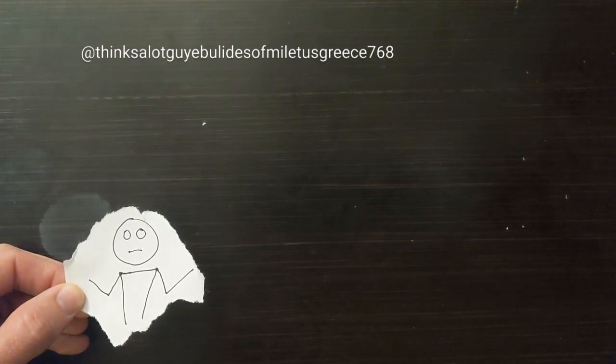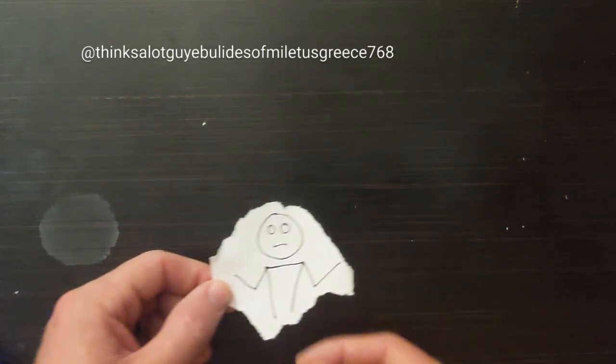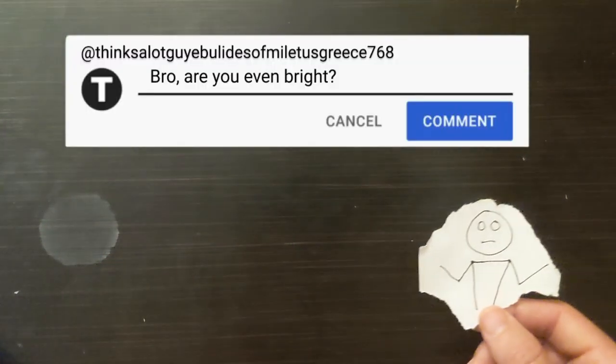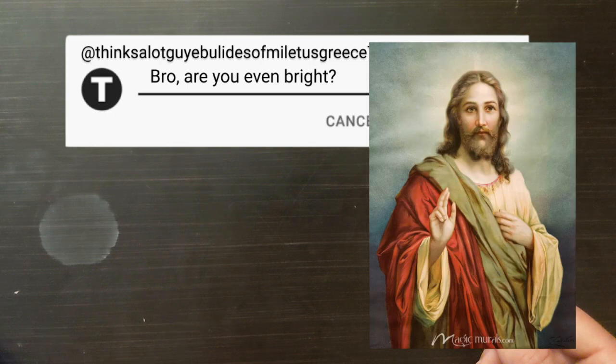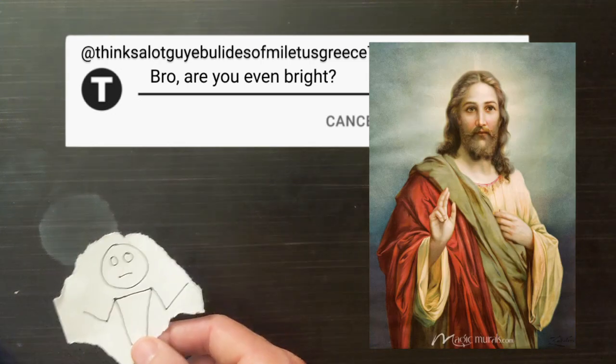The guy who was saying these things went by the handle Eubulides of Miletus, Greece, and was commenting on things way back, even before this guy said things like, I am the light of the world.